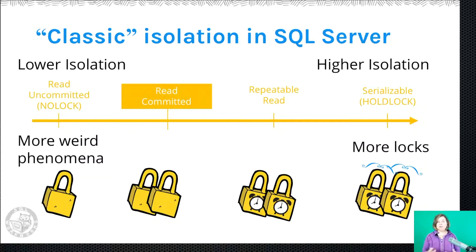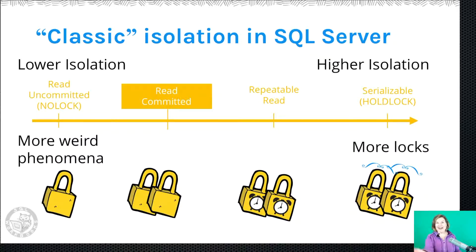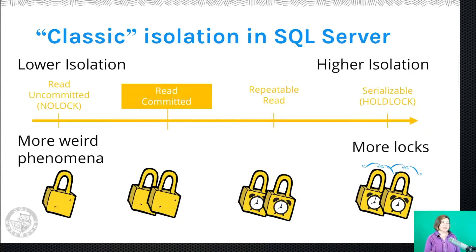Read Committed is still problematic, and it uses more locks because it's protecting data as it reads. The problem with using more locks is you can introduce more blocking. If you've got a lot of readers and more and more writers as you start to scale up, the blocking in Read Committed can increase. Because of the issues in Read Committed, there are other options. We can increase our isolation level — maybe I don't want to count the money more than once. If we increase to Repeatable Read...